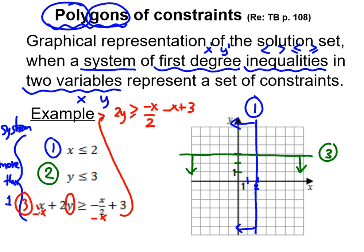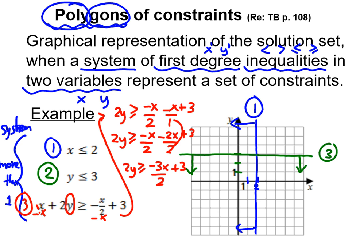Now, to do minus x over 2 minus x, this second term is over 1. To subtract them, they need to be on the same denominator, so put it over 2 by multiplying by 2 at the top and bottom. Now I can put them together: 2y is greater or equal to minus 3x over 2 plus 3. Now I need to get only y, so I divide everything by 2 — giving minus 3x over 2, divided by 2, plus 3 over 2.